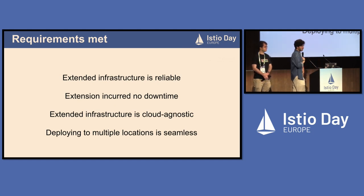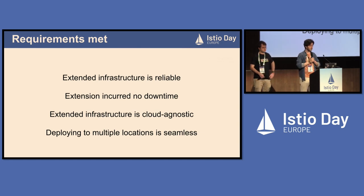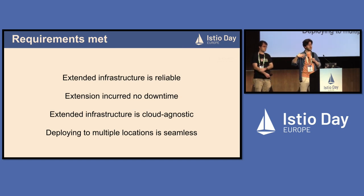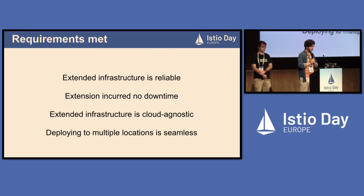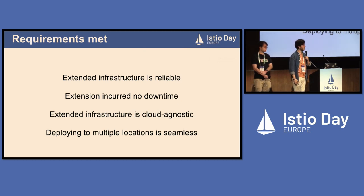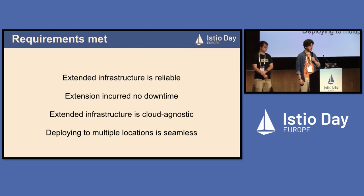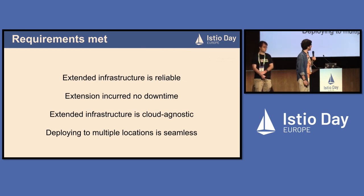Regarding our internal requirements: the extended infrastructure is very reliable with no issues so far. We were able to add the US infrastructure piece by piece, requiring no downtime on the EU infrastructure — deploying the cluster, then the gateway, then configuring DNS. The infrastructure is cloud-agnostic; we use no cloud-provider-specific functionality, just pure Istio config. Deploying to multiple locations is seamless.